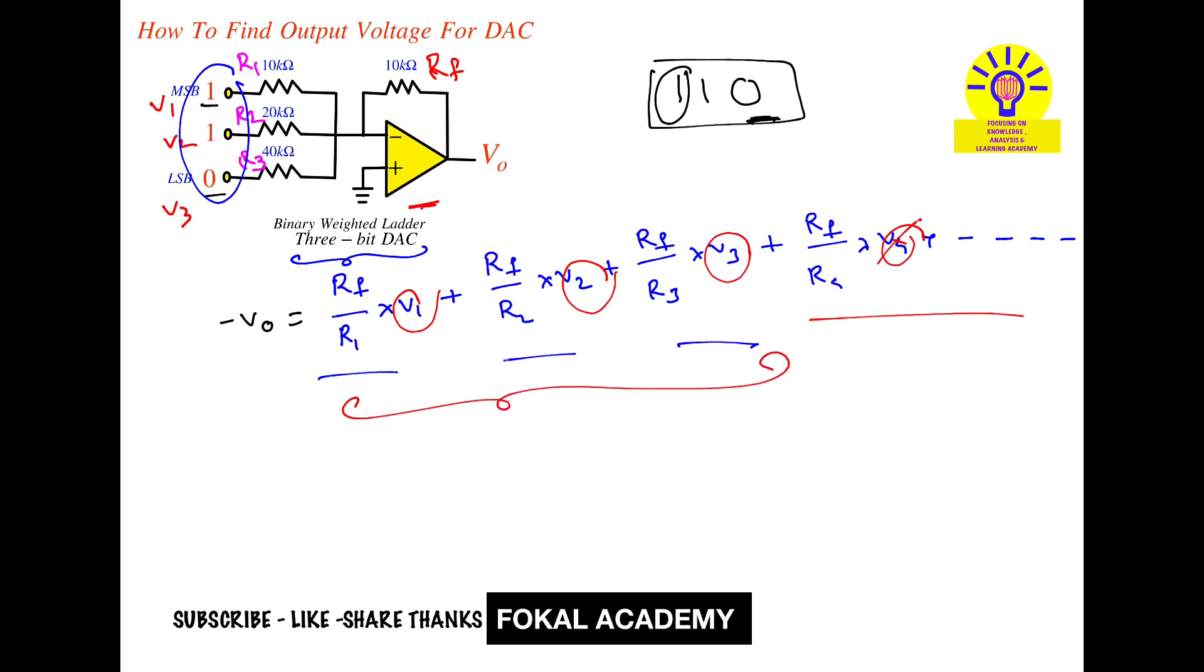Now substitute all the values in the equation. Then we get minus V0 equal to Rf is 10 K upon R1 is 10 K into V1 is 1 plus Rf is 10 K.